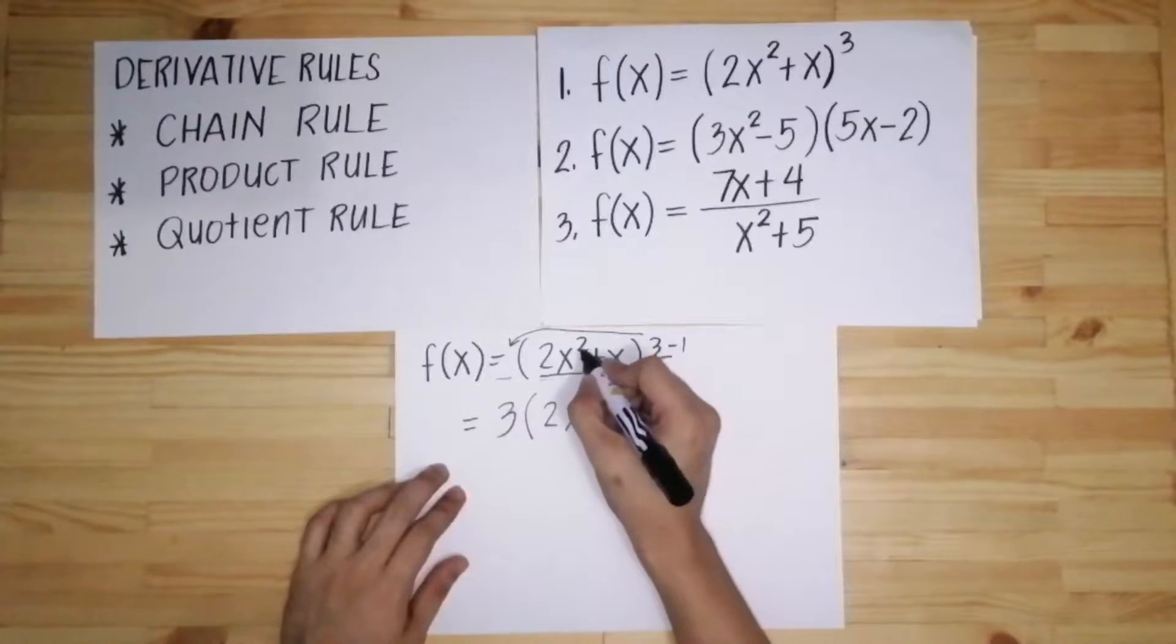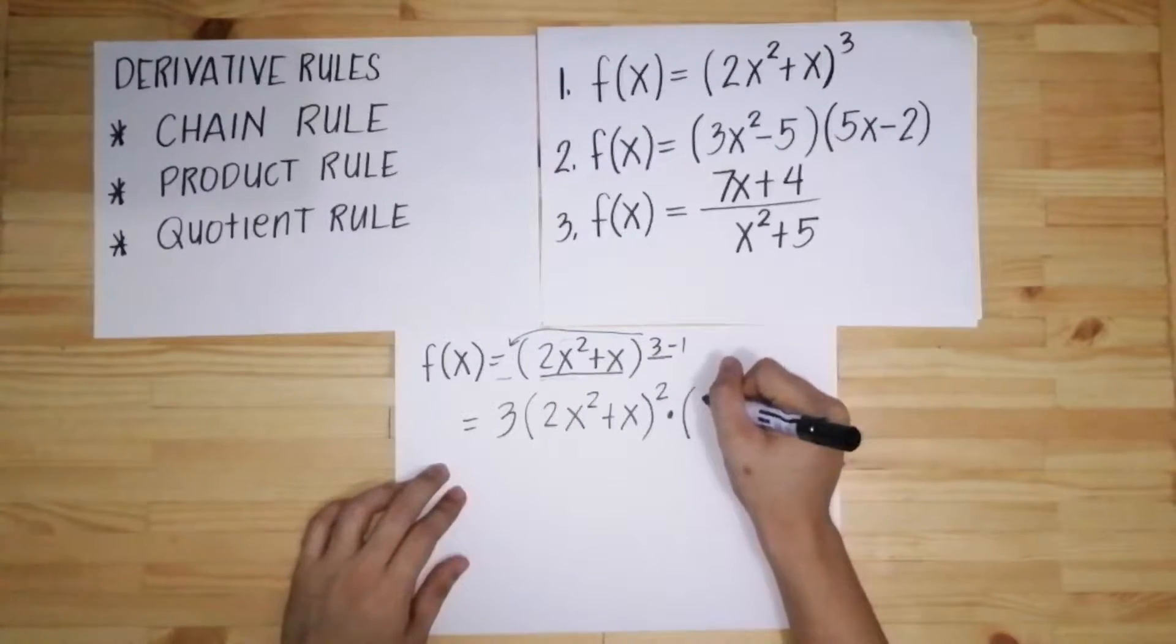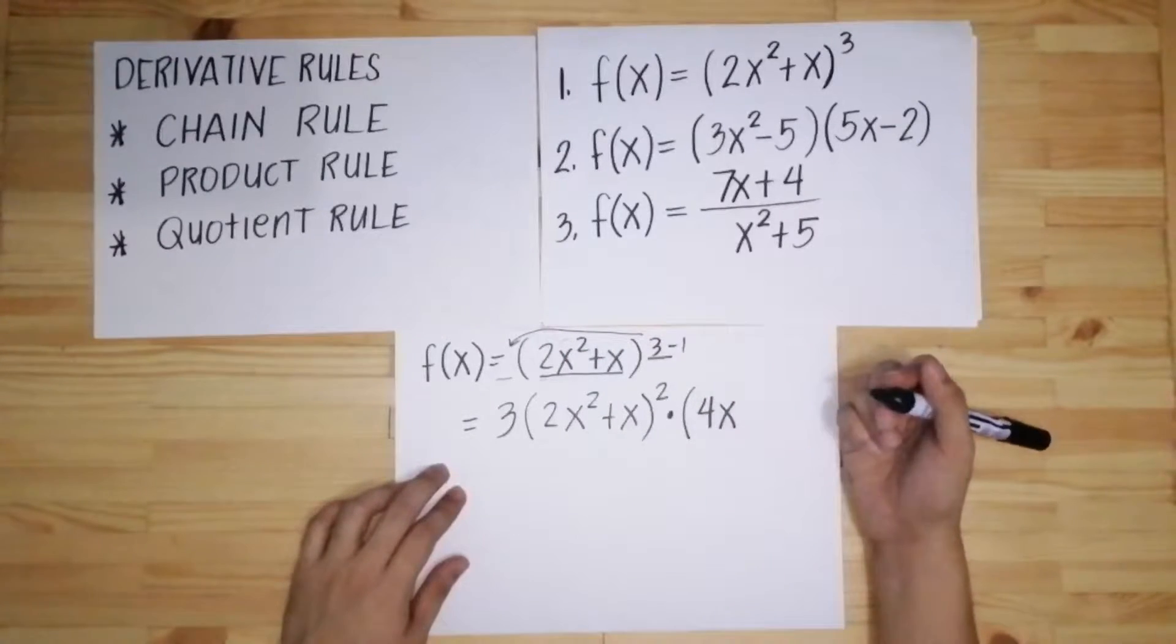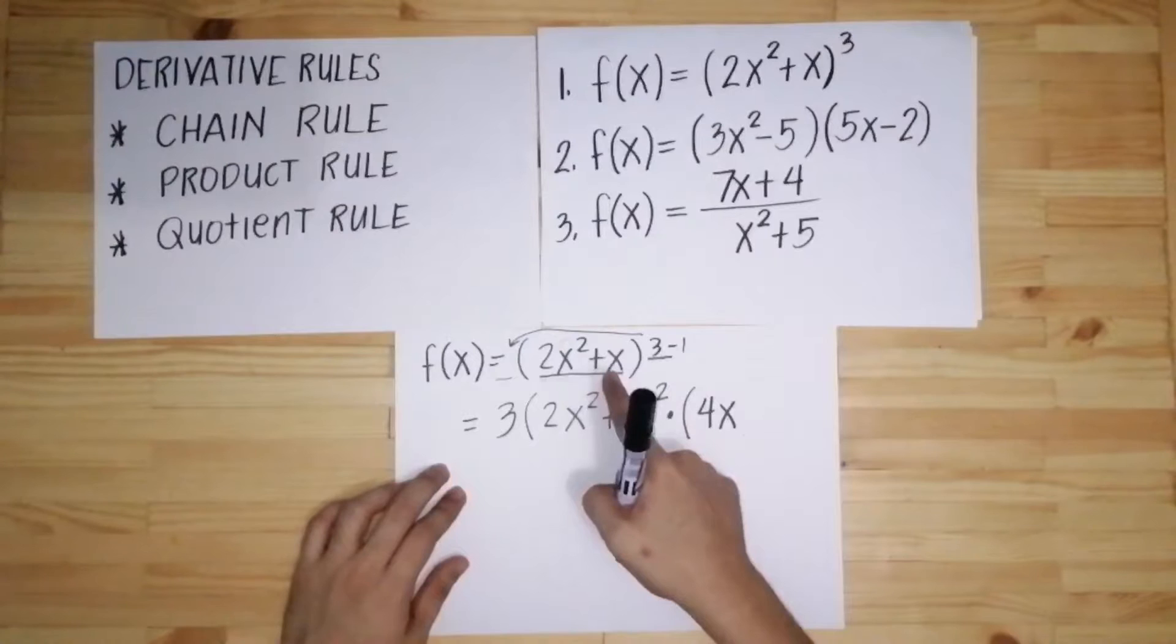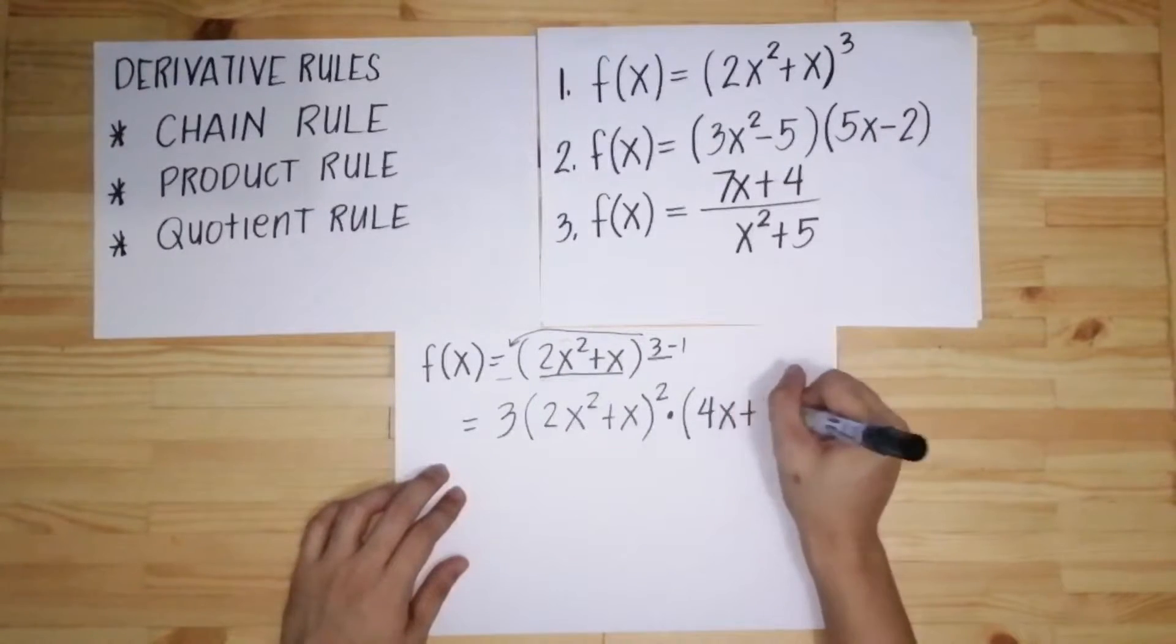Get the derivative of what's inside the parenthesis, times derivative neto ng 2x squared plus x. Using the power rule, 2 times 2 equals 4, then yung x squared magiging x na lang kasi minus 1. So 2 minus 1, x na lang. Then yung x, ang derivative ng x ay 1, so magiging plus 1. Close parenthesis.